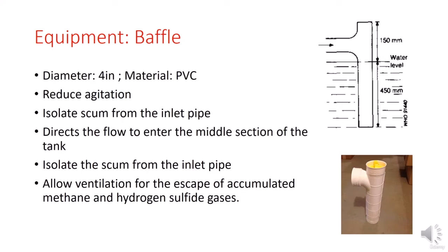Now let's talk about the piping system and the sedimentation tanks. As we have already seen, the diameter of all the pipes is 4 inches, and we are using baffles in all the inlets and outlets. So why baffles? A T-baffle helps reduce agitation, which is very important to consider in any sedimentation process. If the water is agitated, we won't have a proper sedimentation.